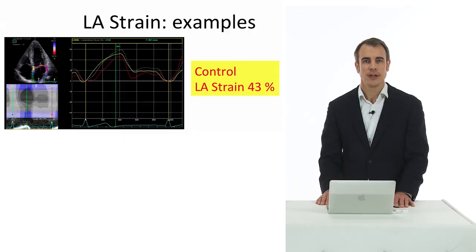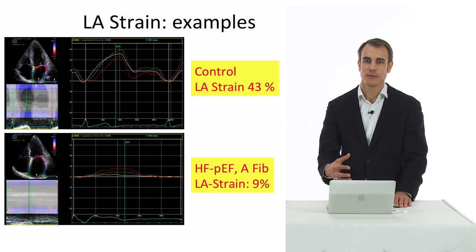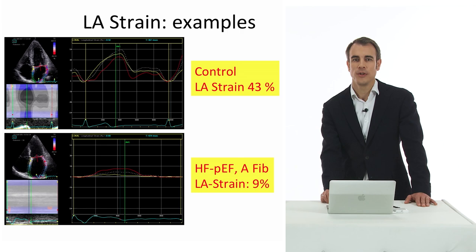Here we can see a healthy control patient with a normal left atrial strain, and here you can see a patient with heart failure with preserved ejection fraction, normal EF, atrial fibrillation, and the LA strain in this patient is very low — only nine percent.